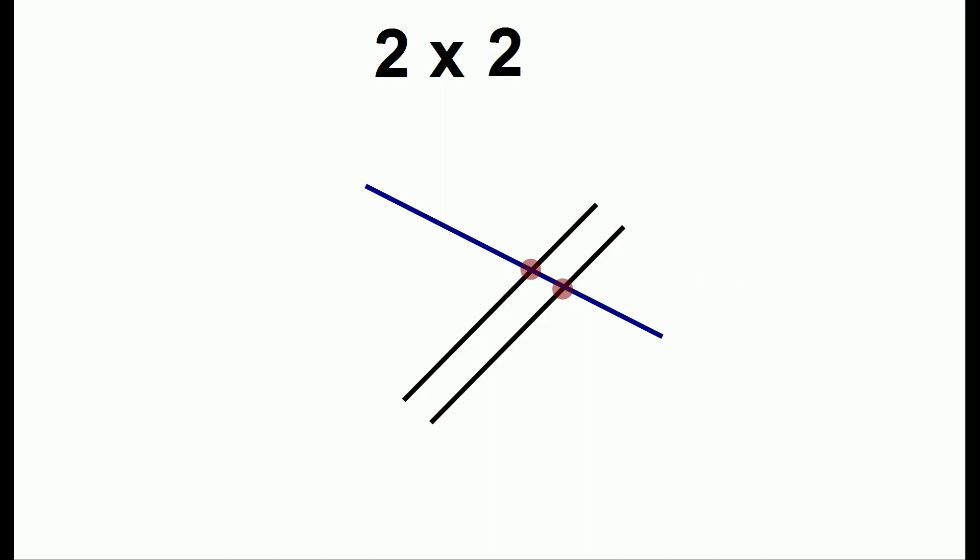If we wanted to do 2 times 2, we'll put 1 more line, and we'll get 4 dots. Continuing the pattern, when we have 2 times 3, we draw 1 more line, and that gives us 6.